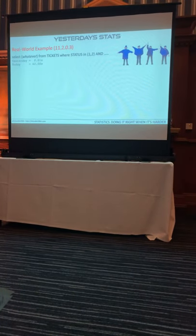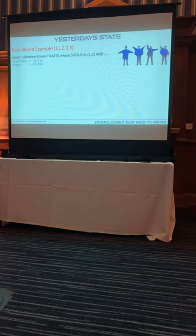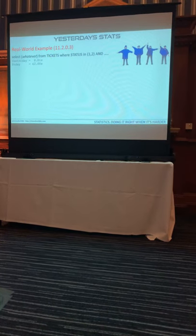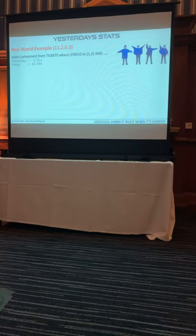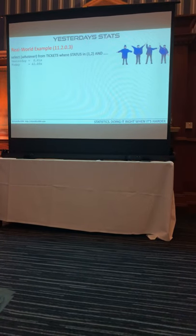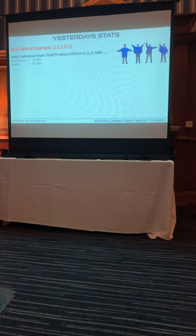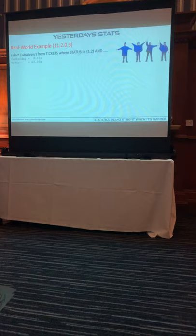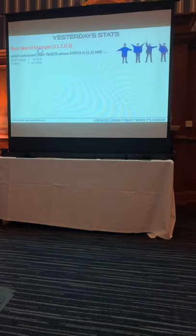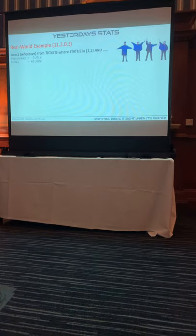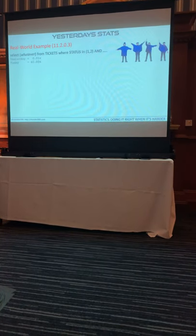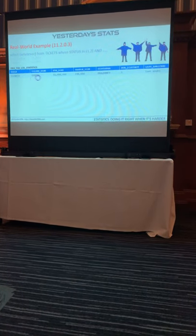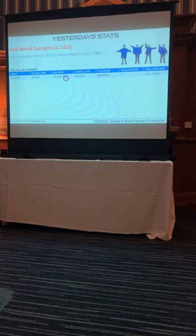I'd like to give you a real world example that happened to me very recently. It was a ticketing system on 11.2.0.3. Yesterday this query was running in 0.01 seconds. Today, 62 seconds. What happened? If we look at the DBA tab statistics, we see the status column. It's got 22 million rows in this column. It's from a sample size of 98,000 and it's got a frequency histogram with one distinct value on it.